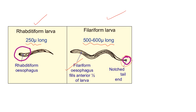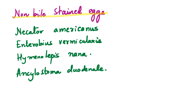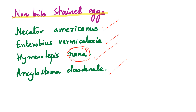This finishes our intestinal nematodes and cestodes. At the end, let me quickly go through some important things to remember. Which are the non-bile-stained eggs? These are the hookworms — Necator americanus and Ancylostoma duodenale — Enterobius vermicularis, and Hymenolepis nana. Remember: Hymenolepis diminuta eggs are bile-stained. You can use the mnemonic NEHA to remember which ones produce non-bile-stained eggs — it's a property of the outer covering of the egg to take up the brown color.